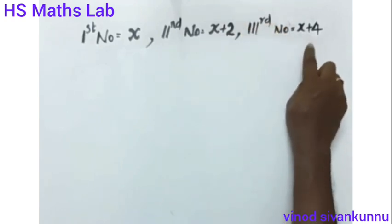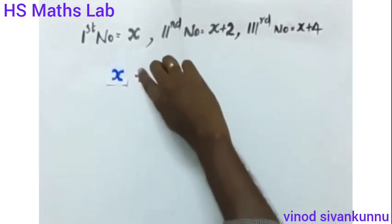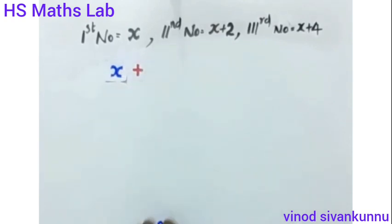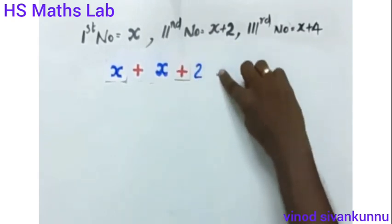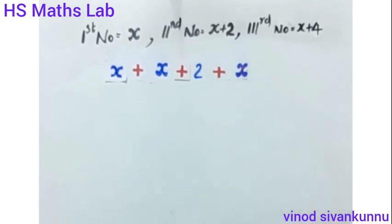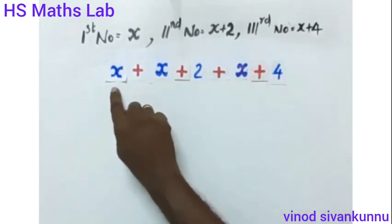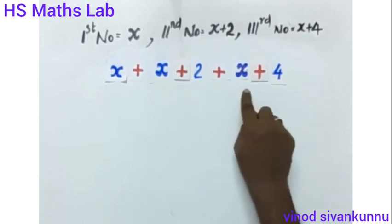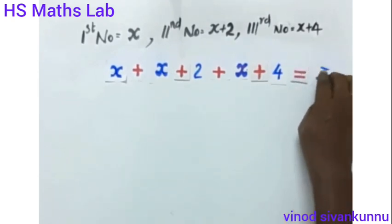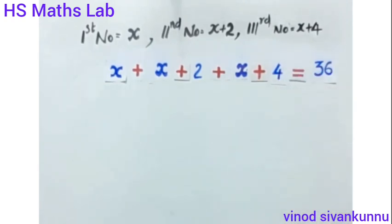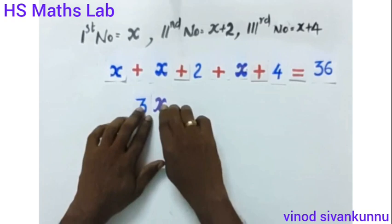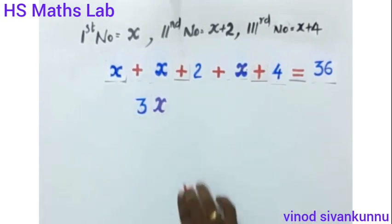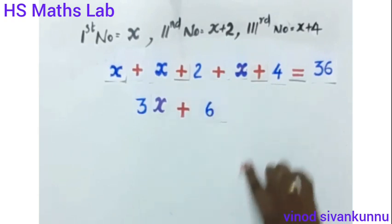Now for even numbers: three consecutive even numbers can be written as x, x plus 2, and x plus 4. Their sum equals 36.